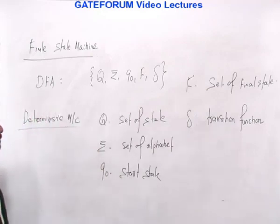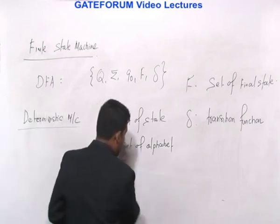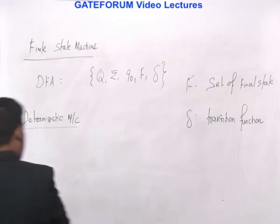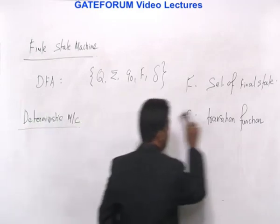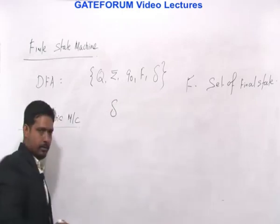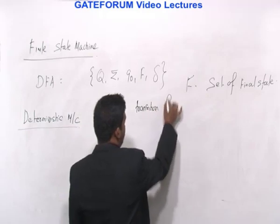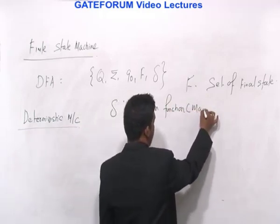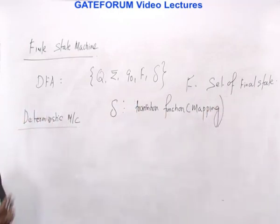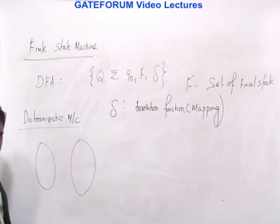Delta is a transition function, and this is how a DFA will be defined. Delta is a mapping. There are a few things to understand about mapping functions regarding domain and codomain — domain and range. For example, consider a mapping from {1, 2, 3} to {x, y, z}.